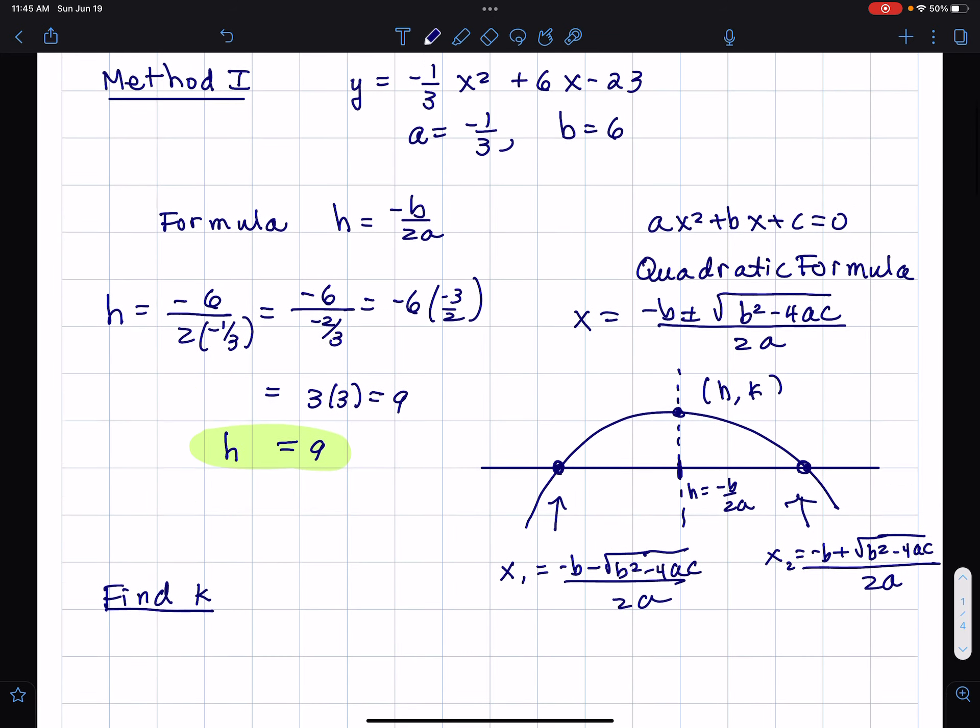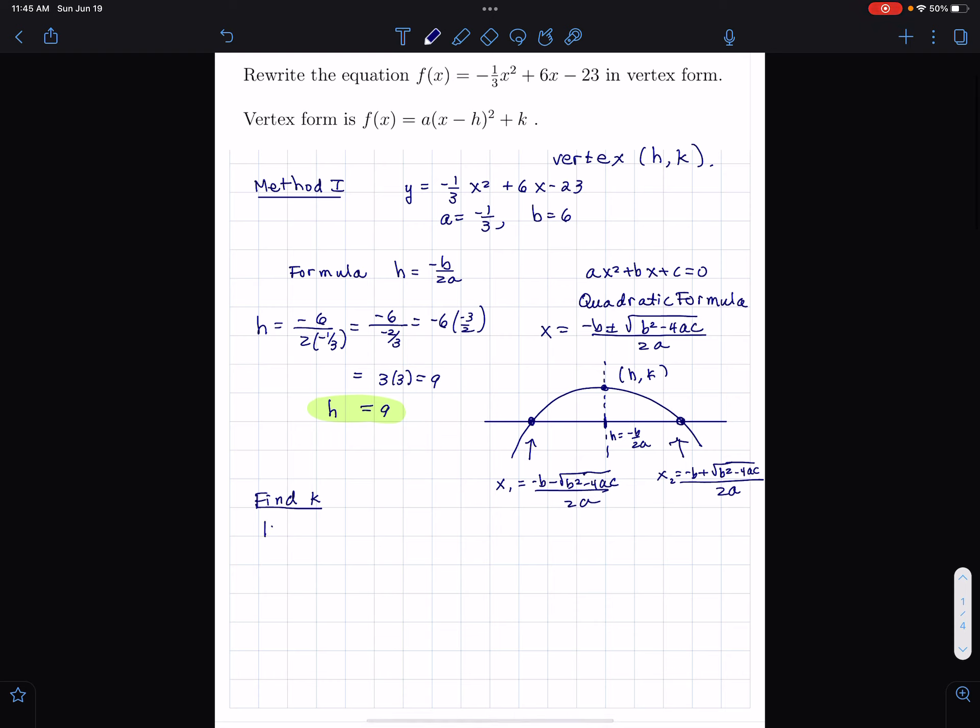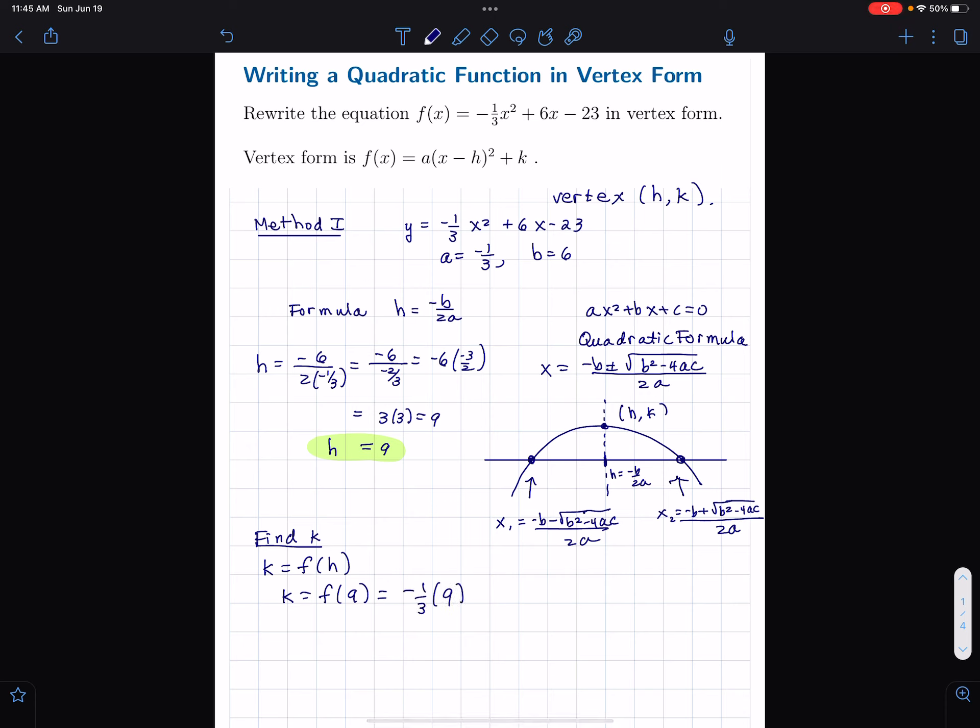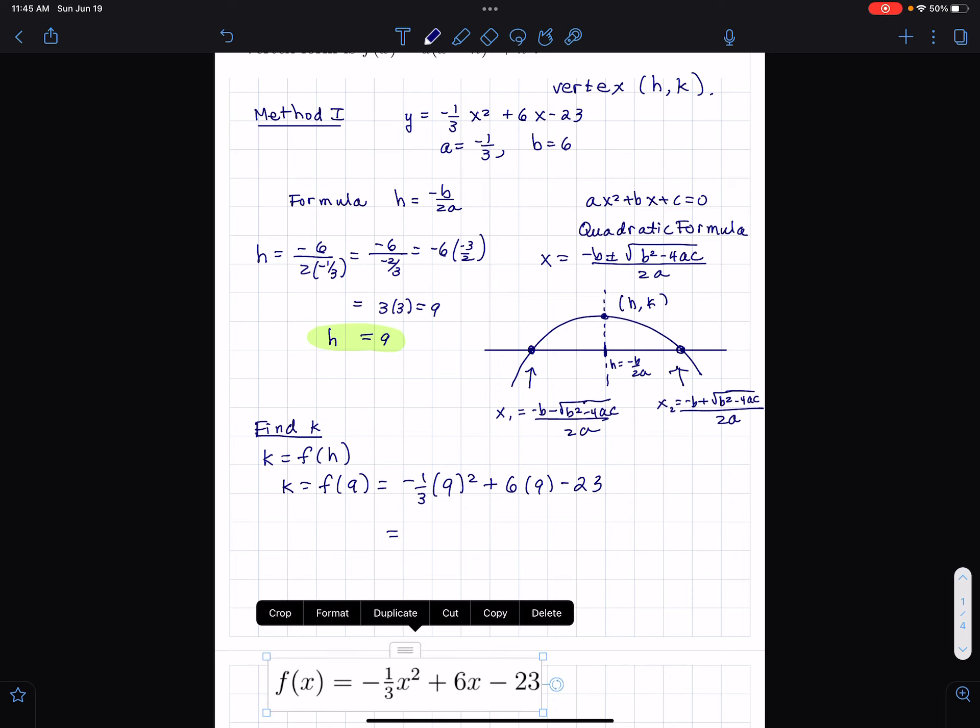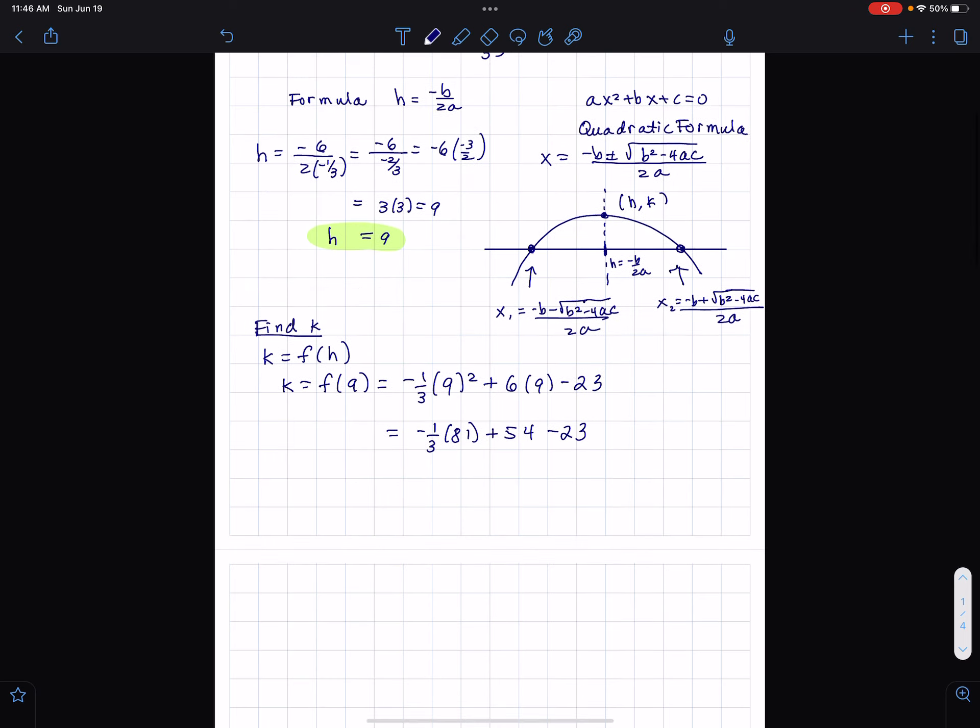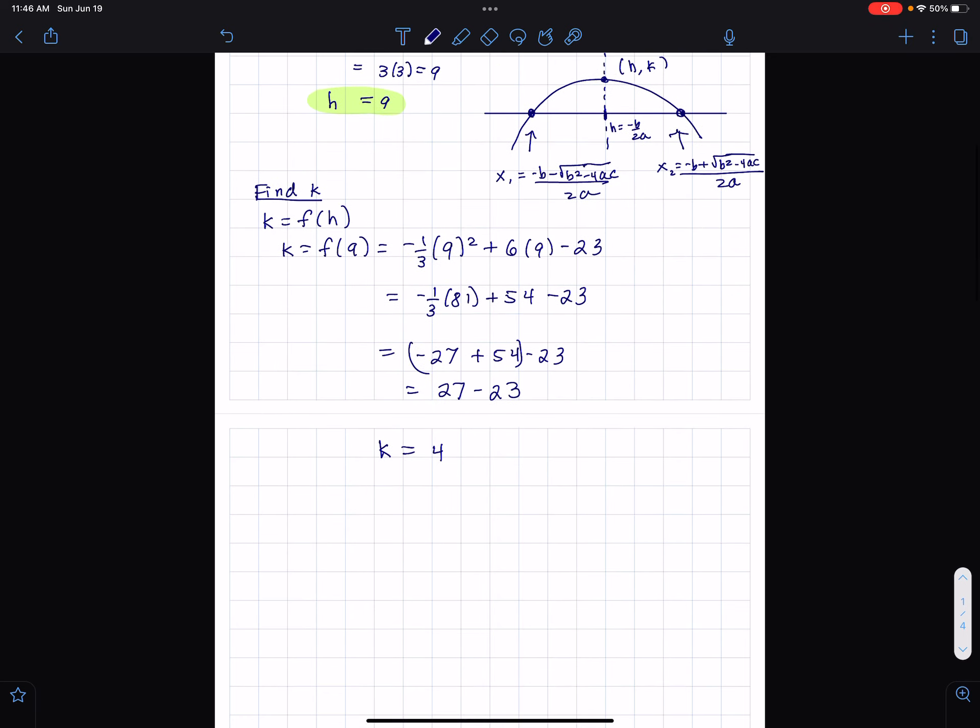So now I have h is 9. How do I find k? k, there is a formula maybe. I guess there's a formula. But I think it's probably better just to point out that k is the y coordinate that corresponds to h. So I'll just plug h into, which in this case is 9. I just plug that in there. And if I just say, I'll just plug it in there. Sometimes, that is not as easy as it sounds. Just depending on. It's not as easy. It sounds like it's going to be easy. But then, just depending on the problem. So 81 divided by 3 is 27. So that's, see, that's the thing is you have to simplify it. It's not necessarily that easy. And then if I group the negative 27 plus 54, that's 27 minus 23. So that makes k is equal to 4. So what did I have? I have a is negative 1 third. I have h is equal to 9. k is equal to 4.